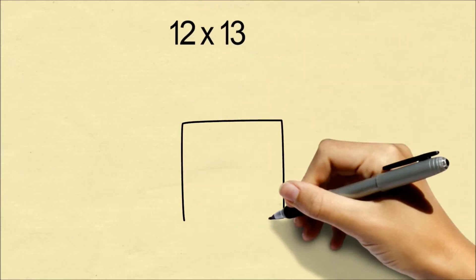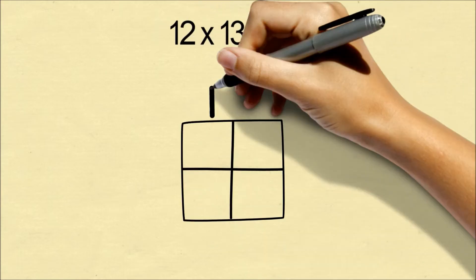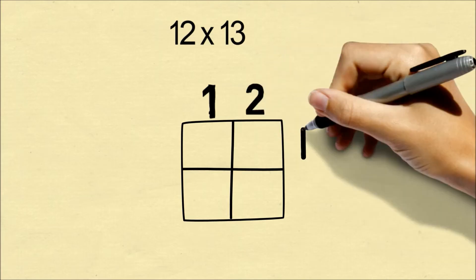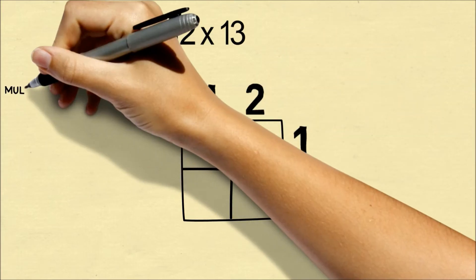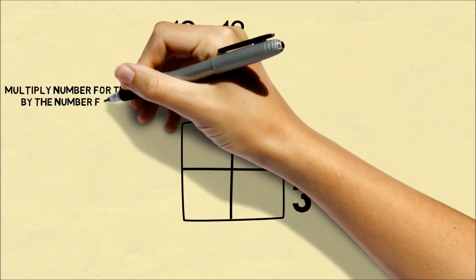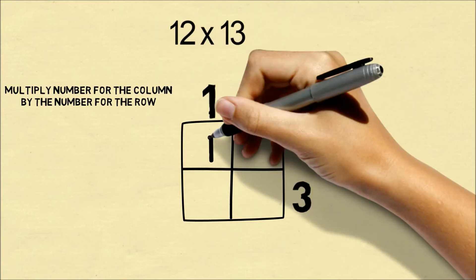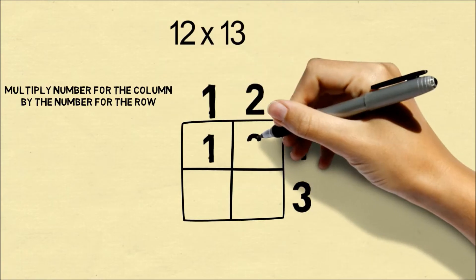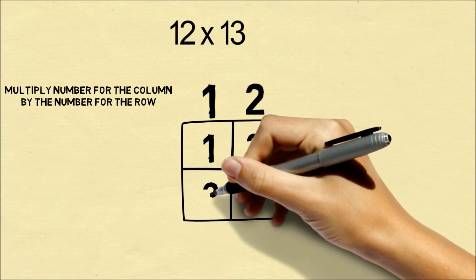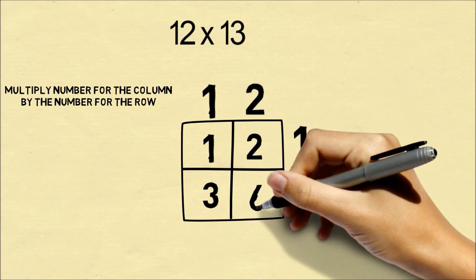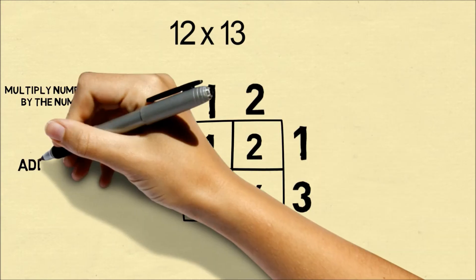Let's say you wanted to multiply 12 by 13. We'll draw out a 2 by 2 table, and we'll write the number 12 in the row, and the number 13 in the column. Now we'll multiply the number in the column by the number in the row. So 1 times 1 is 1, 2 times 1 is 2, 1 times 3 is 3, and 2 times 3 is 6.